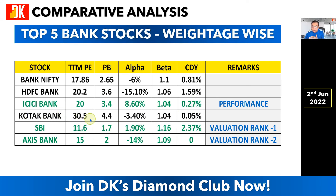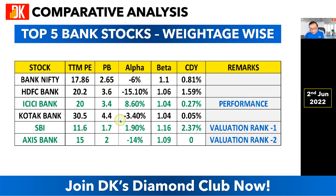Kotak Bank is looking quite expensive — its P/E ratio is 30.5 and P/B is 4.5, both much higher than Bank Nifty. It has also underperformed the benchmark index Nifty 50 by 3.4% and is a poor dividend-paying company. SBI, on the other hand, is looking very attractive. Its P/E is only 11.6 — much lower than the benchmark and lower than any of the other top five banks. P/B is also 1.7, the lowest among the top five. It outperformed Nifty 50 with an alpha of 1.9%, and has the highest dividend yield among the peer group at 2.37%.